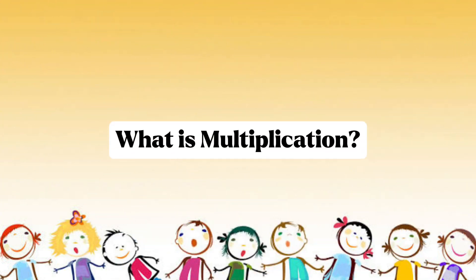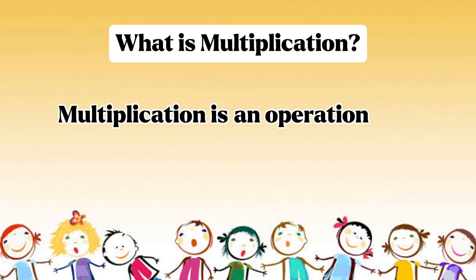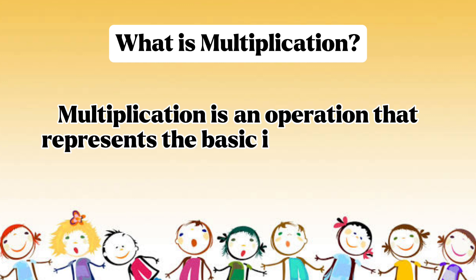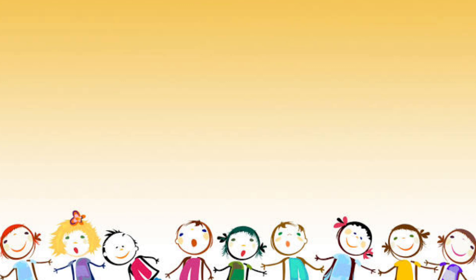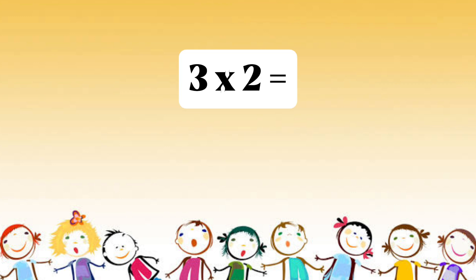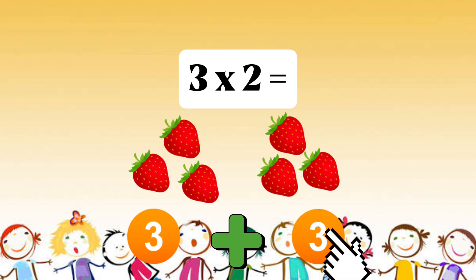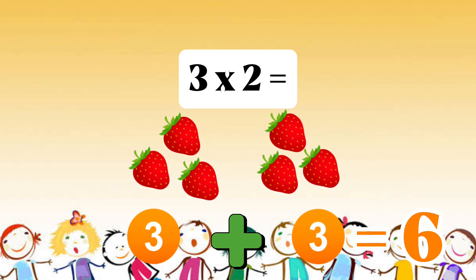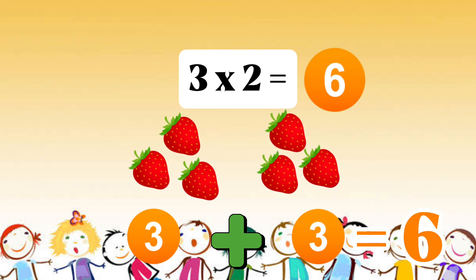What is multiplication? Multiplication is an operation that represents the basic idea of repeated addition of the same number. For example, if you multiply 3 by 2, you double the other number: 3 plus 3 equals 6. So 3 multiplied by 2 equals 6.